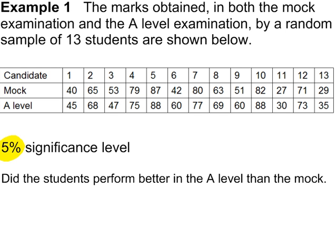If the students performed equally well in both the mock and the A-level, then the median mark for the mock and the median mark for the A-level will be the same, so the difference between the medians will be zero. If the students performed better in the A-level, so the median A-level mark is higher than the median mock, then if you do A-level minus mock, you'll get a positive value.